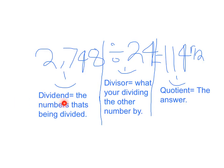The dividend is the number that's being divided, which in our case is 2,748. The divisor is what you're dividing the other number by, which is 24. We're trying to see how many times 24 goes into 2,748. And the quotient is the answer. And our answer is 114, remainder 12.